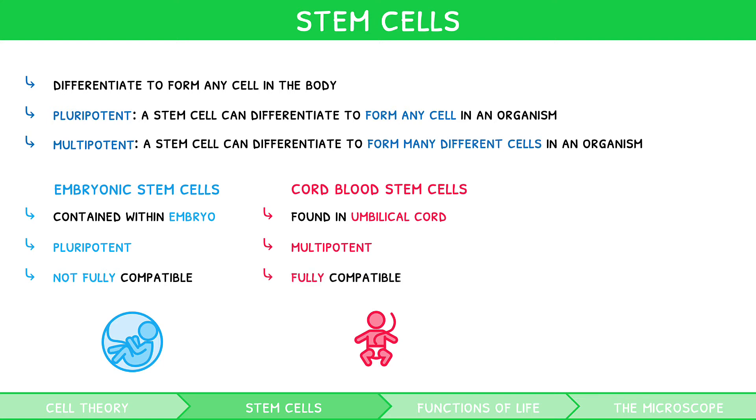The third are adult stem cells. These are found in the bone marrow of an adult. Like cord blood stem cells, they are multipotent and fully compatible.